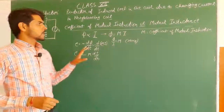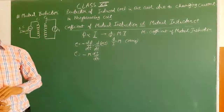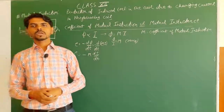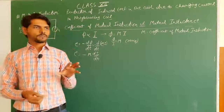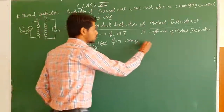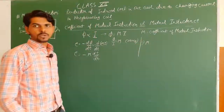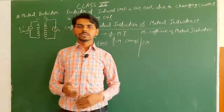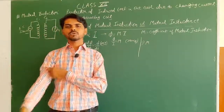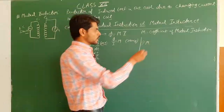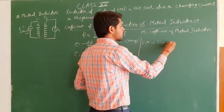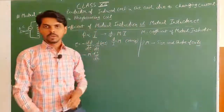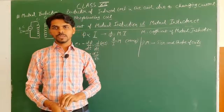Now the factors on which mutual inductance M of two coils depends. The first factor is the geometry of the coils — meaning the size and shape of the coils. Different sizes and shapes give different values of M. So M depends on the size and shape of the coils.